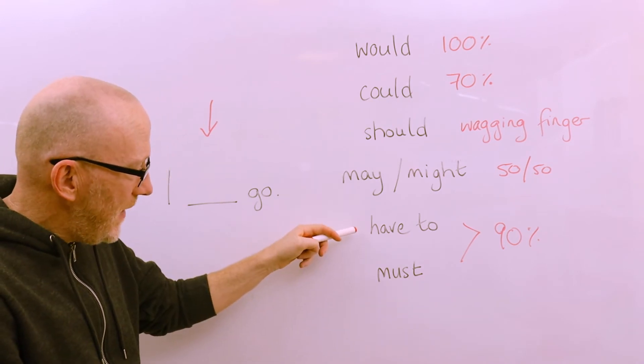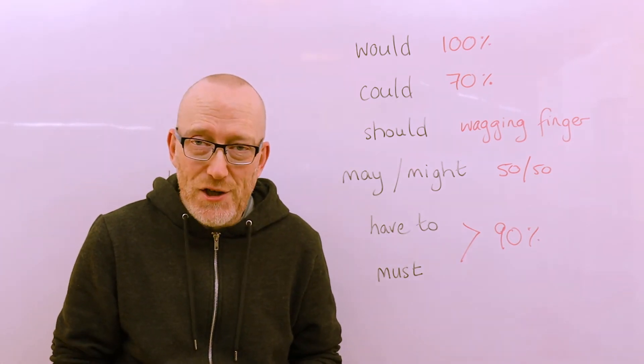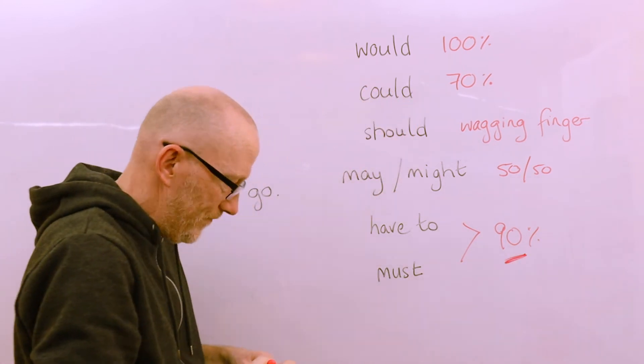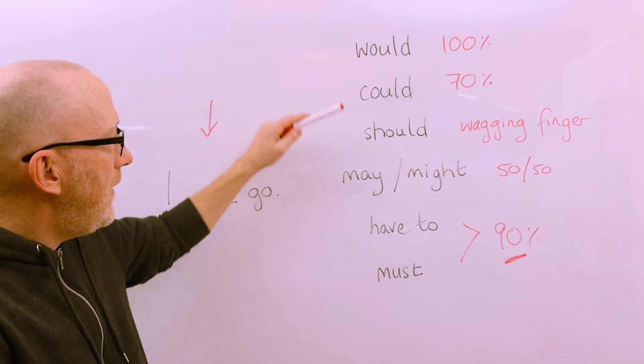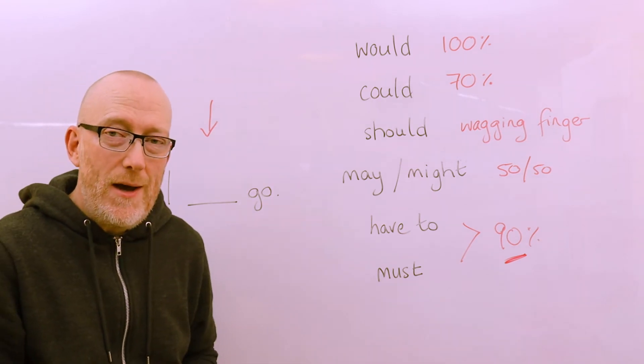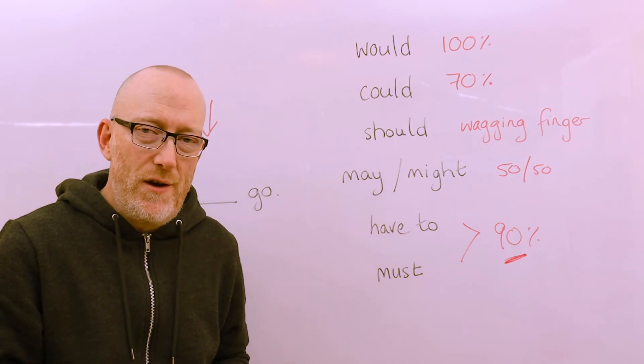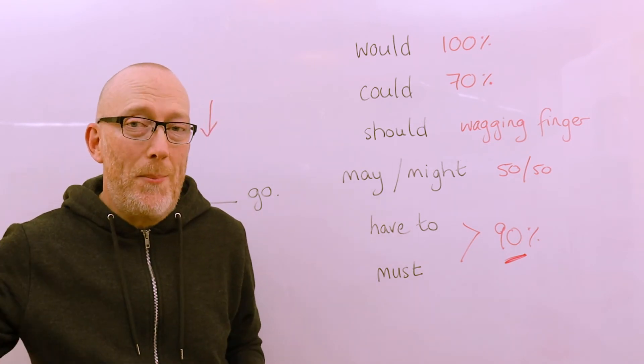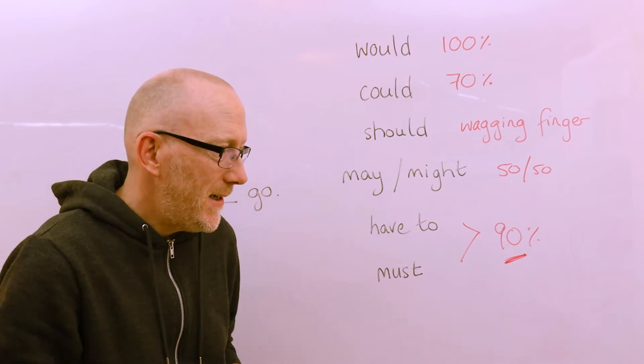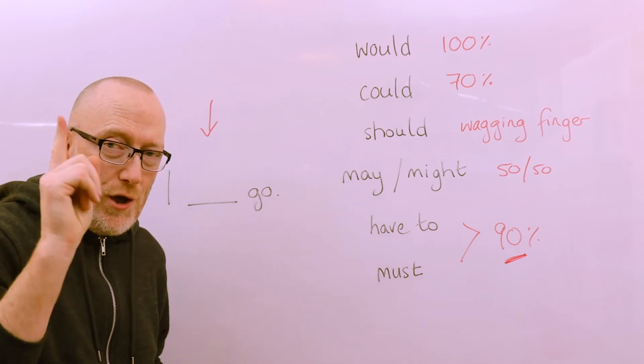Now that brings us next to have to and must, which most of you are going to know as modals of obligation and you're absolutely right. Now I've put 90 percent here because these two modals sort of sit somewhere between could and would, but they are very different. Particularly have to - if you're going to use the modal have to, try and imagine that it's not your decision, it's somebody else telling you what to do.